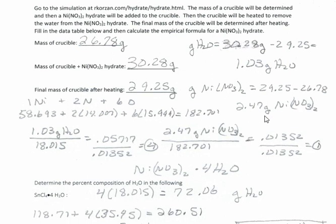Now we need to do an empirical formula determination. First, get the molar mass of water: two hydrogens plus one oxygen = 18.015 g/mol. Also get the molar mass of nickel nitrate: one nickel, two nitrogens, and six oxygens = 182.701 g/mol. Then take grams of water divided by molar mass of water to get moles: 0.05717 mol. Take 2.47 grams of nickel nitrate divided by 182.701 to get moles of nickel nitrate.